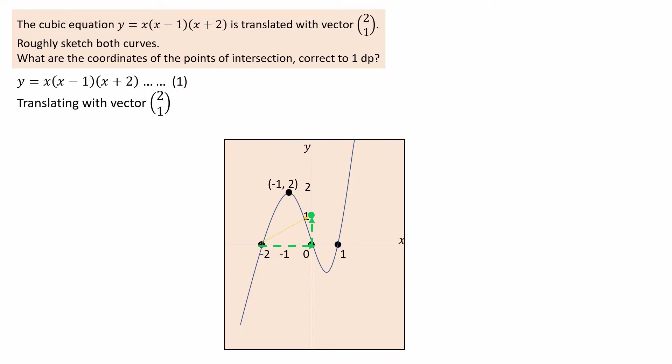To translate with vector (2, 1) simply means that each point on the graph moves two units to the right and one unit up. So moving each point on the curve, plotting, and then joining the points gives the congruent translated shape.